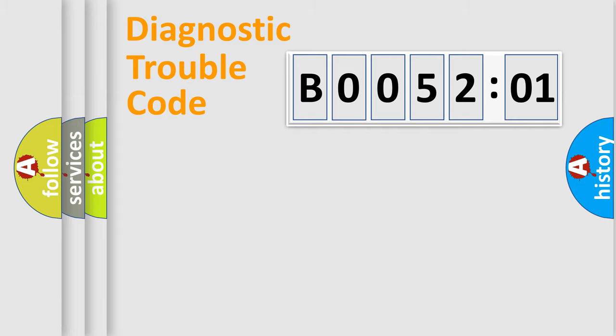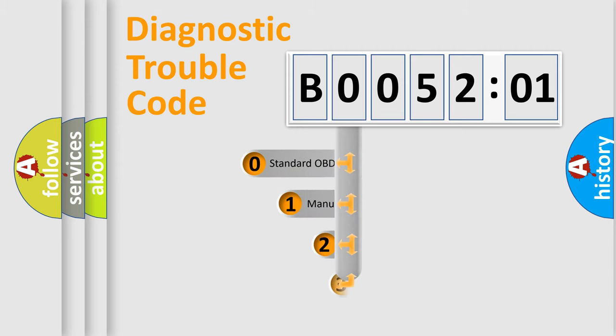Powertrain, Body, Chassis, Network. This distribution is defined in the first character code.